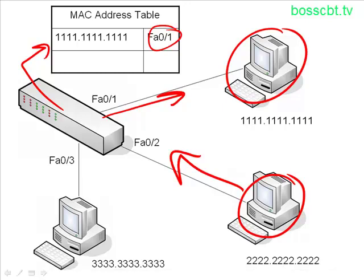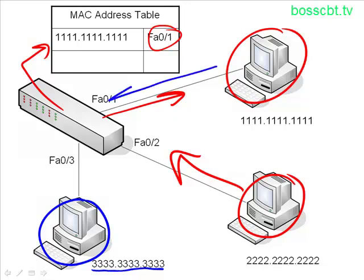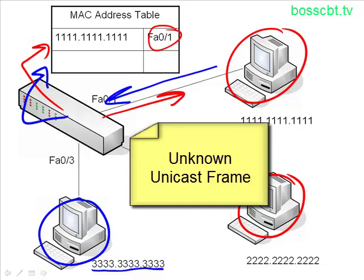But what happens when PC1 wants to send a frame to PC3? PC3 is not listed in the MAC address table — in fact, the MAC address table only has one entry in this example. So PC1 sources the frame, puts it on the wire, hits the switch. The switch consults the MAC address table and this time it doesn't find a listing for the destination MAC address 3333. This particular frame is called an unknown unicast frame. Unicast traffic is traffic destined for just one device, one host, and since the MAC address table doesn't have a listing for 333, the switch doesn't know what to do with it.